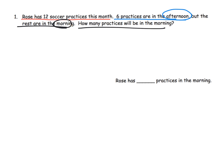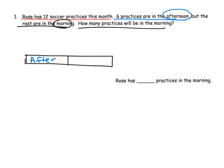Normally you would think of characters as Mickey Mouse and Goofy, but in this case it's two things going on — one thing in the afternoon and the other in the morning. So I'm going to draw my tape diagram. It doesn't have to be perfectly 50/50. It says six practices are in the afternoon, so I'm going to label this 'after' and write six. Then it says the rest are in the morning, so I'm going to put 'morning' here with a question mark.